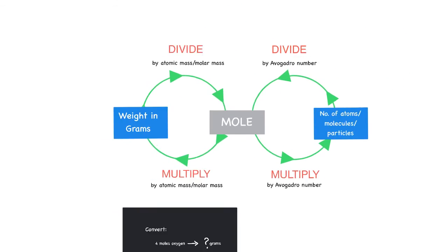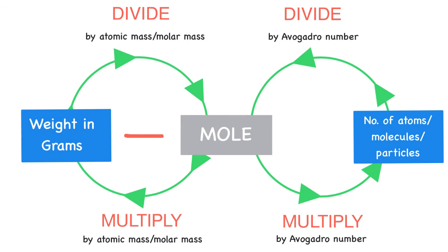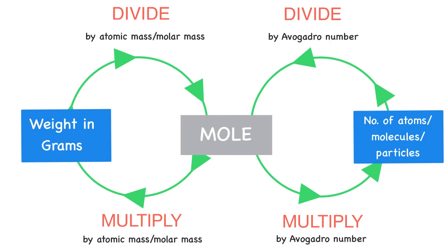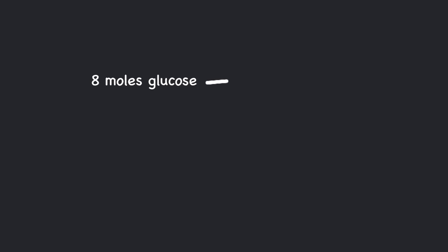When converting from moles to number of particles, multiply by Avogadro's number, and vice versa. Therefore, 8 moles of glucose has 8 × Avogadro's number = 48.1×10²³ molecules.